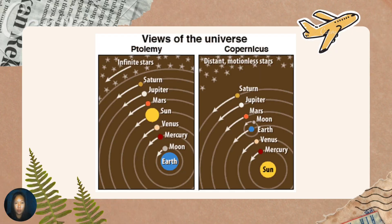This is how people viewed the universe. On the left side is the model of Ptolemy and on the right side is the model of Copernicus. You can see here that in Ptolemy's model, the Earth is the center, and the Moon and other planets are revolving around the Earth. While in Copernicus's model, which is called the heliocentric model, the Sun is the center of the universe. Mercury, Venus, and other planets, including the Earth and Moon, revolve around the Sun. This is what Nicolaus Copernicus proposed during his time.